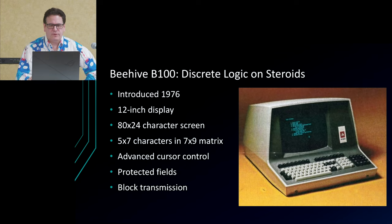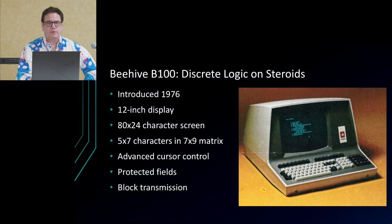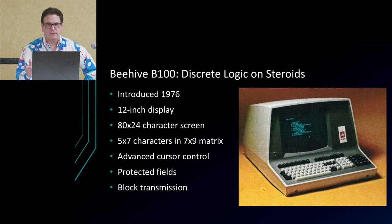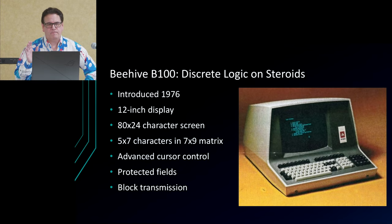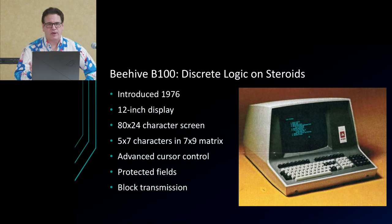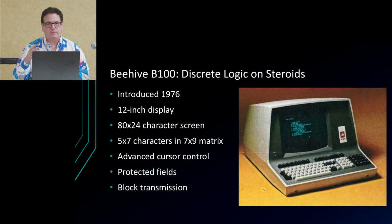The first terminal we'll look at is the Beehive B100 — probably the fanciest discrete control logic terminal there is. Introduced in 1976, it has a 12-inch display — a very common size for terminals, good for an 80-by-24 screen. The 12-inch display tubes were likely chosen because they were being manufactured for black-and-white televisions, making them cost-effective. Characters are 5-by-7 dots within a 7-by-9 matrix, with the larger matrix providing blank space between characters and between lines.